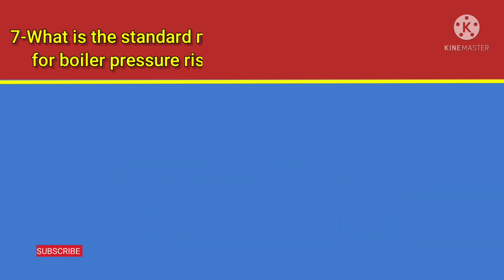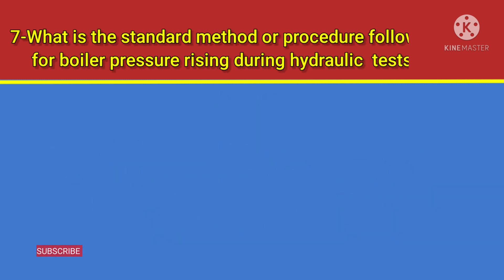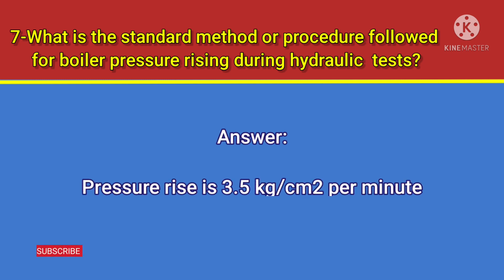Question number 7: What is the standard method or procedure followed for boiler pressure rising during a hydraulic test? Answer: Pressure rises at 3.5 kilograms per square centimeter.